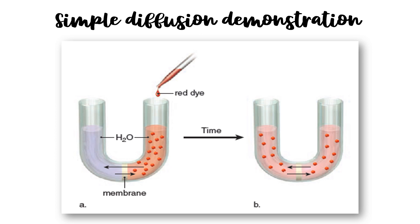For example, in letter A, a red dye is added to water separated by a membrane. The red dye molecules can pass through the membrane and move randomly. But over time, the net movement of dye is toward the region of lower concentration. In letter B, eventually the dye molecules are equally distributed throughout the container, and there is no net movement of dye in either direction.